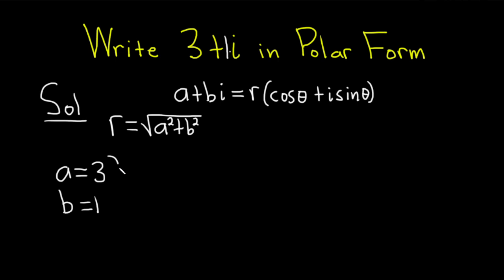So using this information, we have R equal to the square root of, so a is 3, so we get 3 squared plus, and then b is 1, so we get 1 squared. R is equal to square root of 9 plus 1, which is just the square root of 10. Pretty easy.